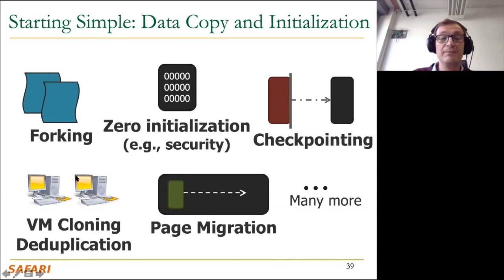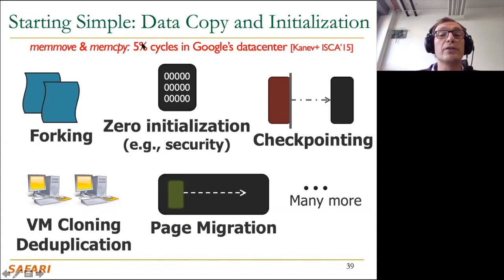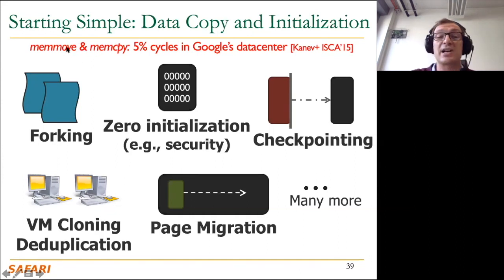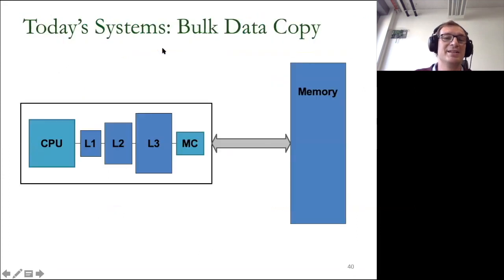Google's data center workload paper showed that just two function calls — memset and memcpy — account for about 5% of execution cycles across all the workloads they execute in their data center. That 5% is a lot for just two function calls, and there are likely many more data copies done without those function calls. That same paper later cites work on in-memory copy as a very good direction to explore going forward, because they see a lot of copy bottlenecks.